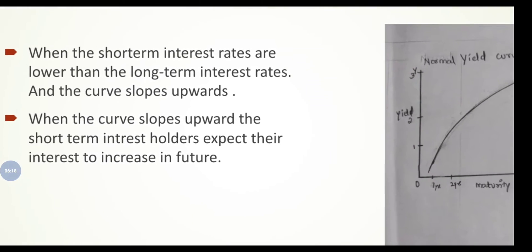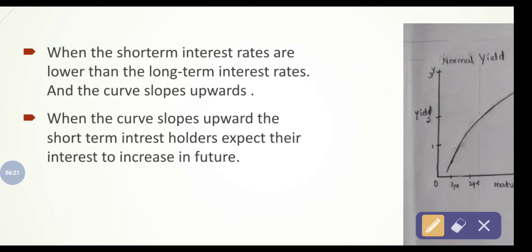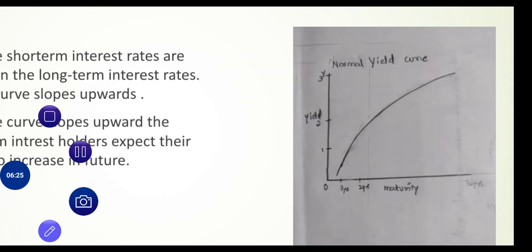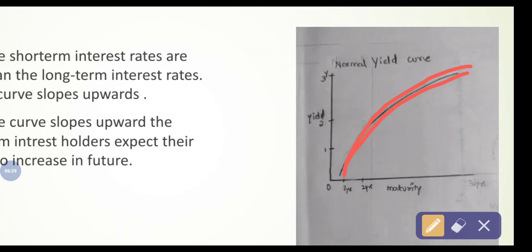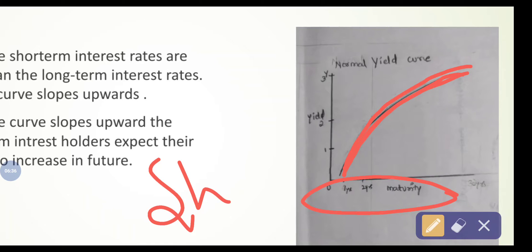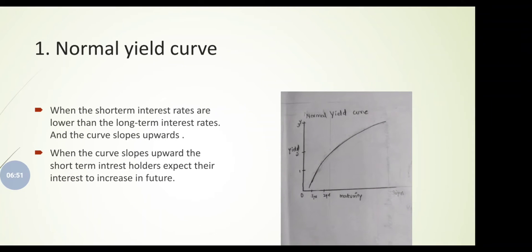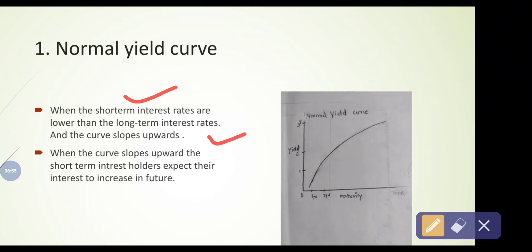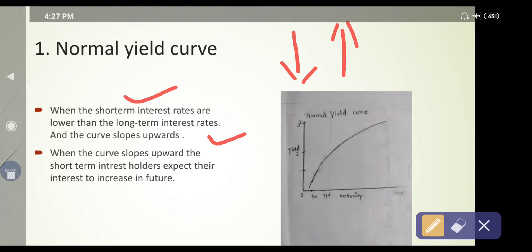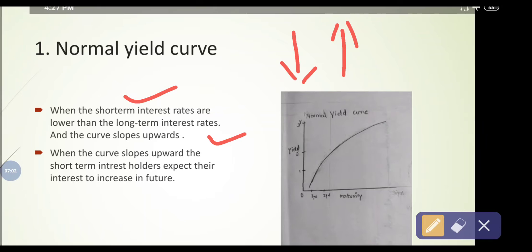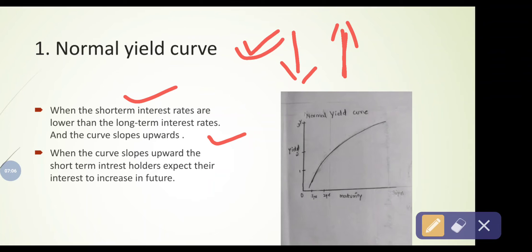In a normal yield curve, the curve slopes upward. Short-term investors expect that one day the interest rates on their bonds will increase as maturity increases. It is simply a comparison between short-term and long-term interest, where short-term interest is lesser than long-term interest. When long-term interest increases, short-term interest holders expect their interest will also increase in future.